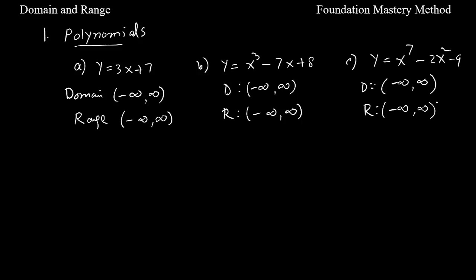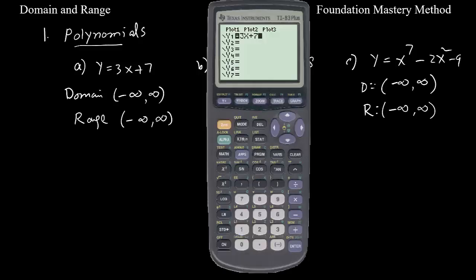Let me plot the function y equals 3x plus 7. I type here and take the standard window, go to zoom 6. Then you can see the graph goes all the way up and down, so this gives you range negative infinity to positive infinity. Domain also goes all the way negative to positive.